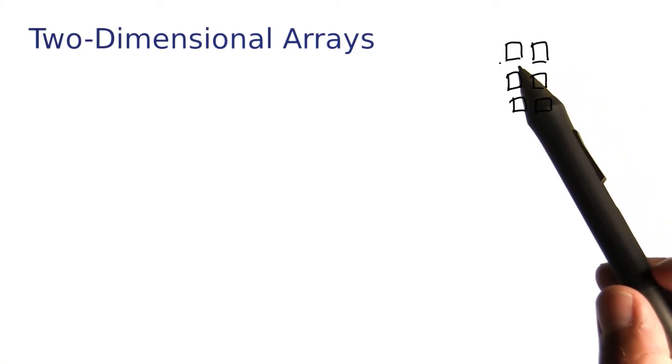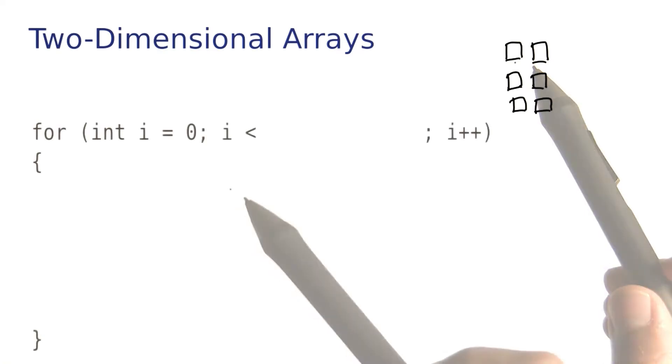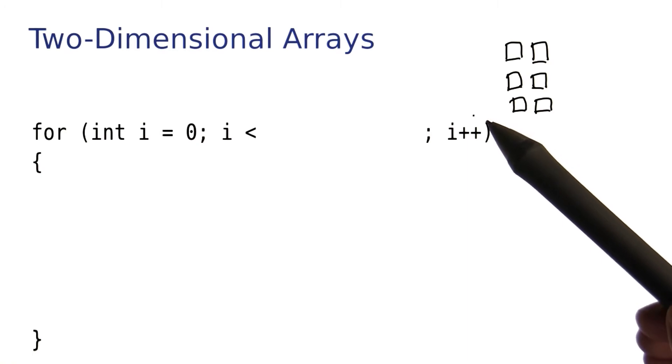To visit all elements in a 2D array, you want to loop over the rows and columns. Let's first loop over the rows. So we'll have a row index i that assumes the values 0, 1, and 2 in this example.